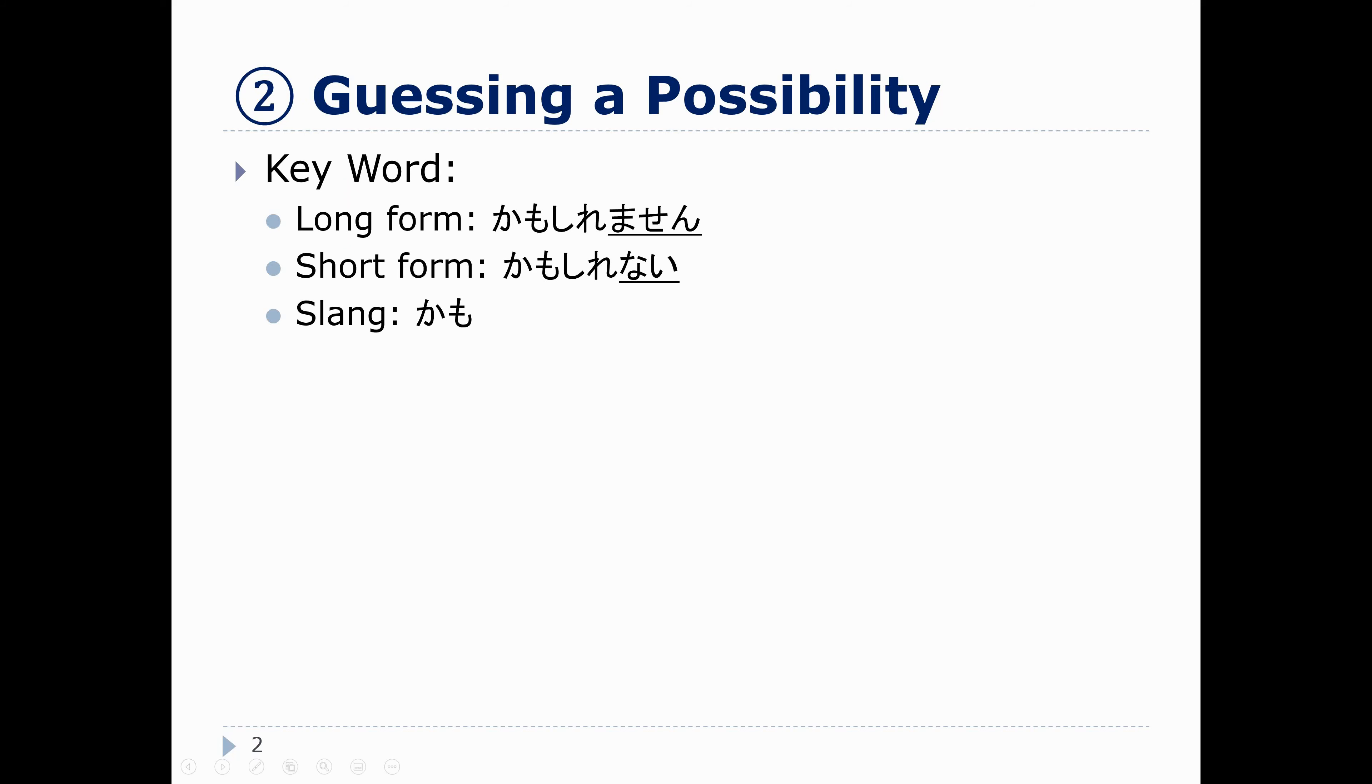So, the short form, anything with ません will change to ない. So, in the short form, if we say this in the short form, it's かもしれない. In slang, like an even more casual speech, we can even just shorten it to かも.